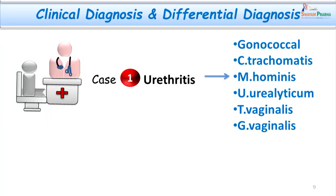The clinical diagnosis in case number 1 was made as urethritis. The differential diagnosis could be gonococcal urethritis, it can be due to Chlamydia trachomatis, Mycoplasma, Ureaplasma group of organisms, or it can also result from infection by parasites like Trichomonas vaginalis and also Gardnerella vaginalis.